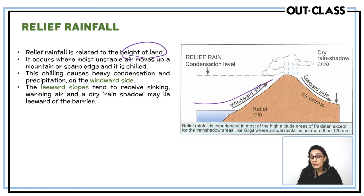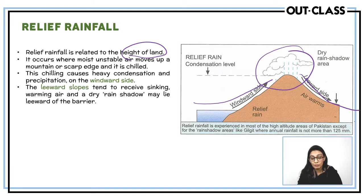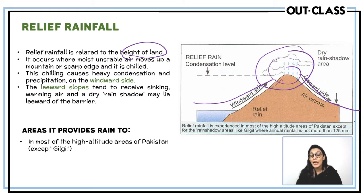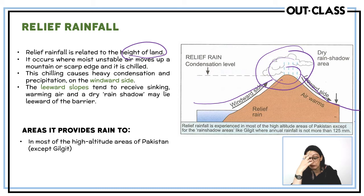The rain falls on top where the wind starts to descend — the windward side is where the wind is coming up. You experience relief rainfall on top of highland regions only. You do not experience relief rainfall in any plain, arid, or lowland region. It is specific to higher altitude regions of Pakistan.